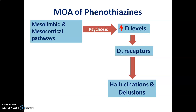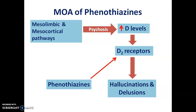Now let us discuss the mechanism of action of phenothiazines. Phenothiazines act on dopamine receptors. These dopamine receptors act on various pathways such as mesolimbic and mesocortical pathways. These pathways are responsible for producing psychosis and they produce increased levels of dopamine. This increased dopamine acts on D2 receptors and produces hallucinations and delusions. Phenothiazines act on D2 receptors as antagonists, thus inhibiting hallucinations and delusions, decreasing dopamine levels, and acting as antipsychotic agents.